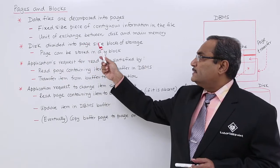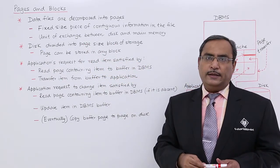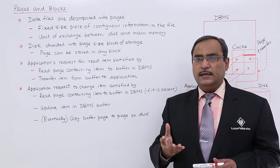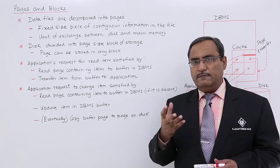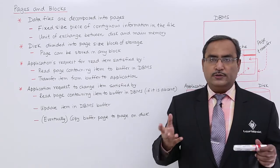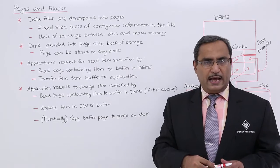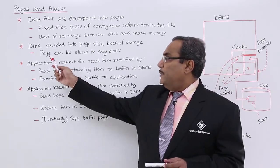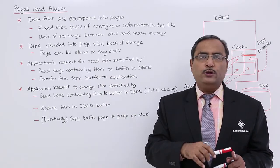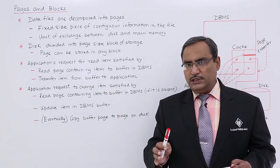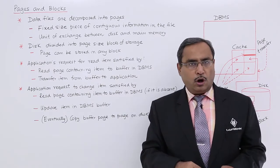The disk is divided into page-size blocks of storage. Since disk is a block storage device, its content is distributed into multiple blocks, and each block has the same size as a page. There is no dependency on which block a page goes to — any page can be copied or stored onto any block.